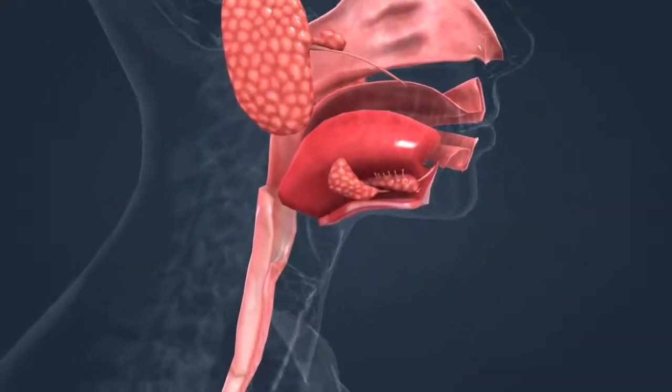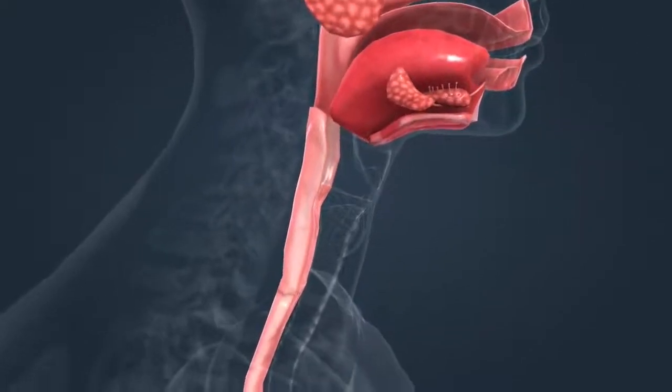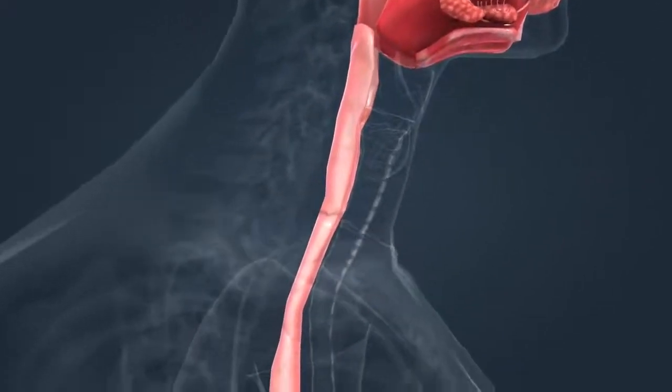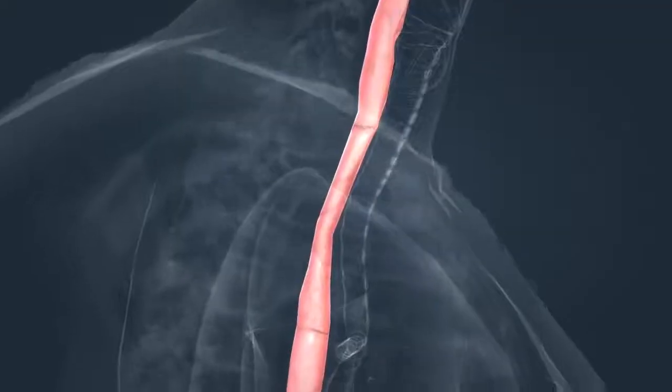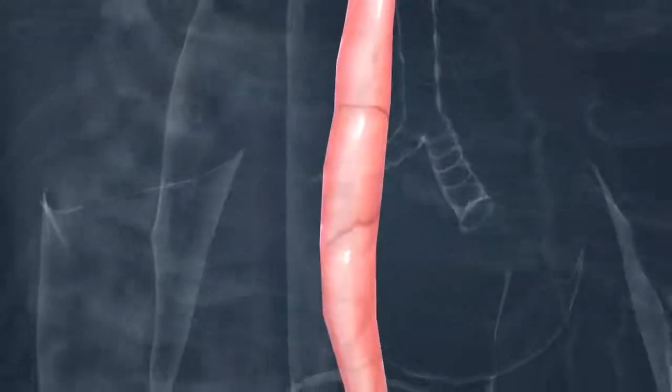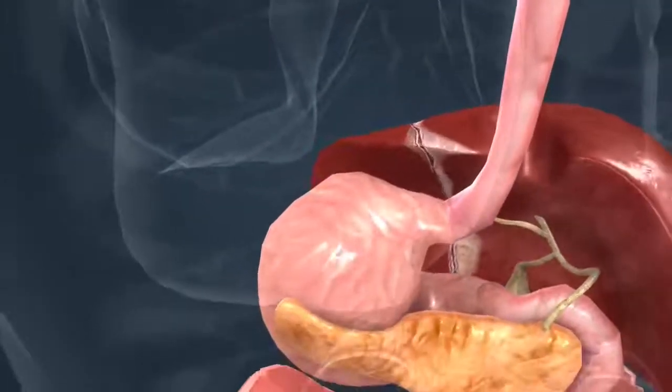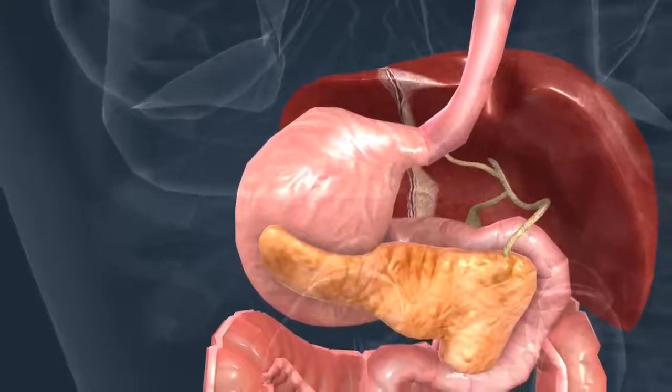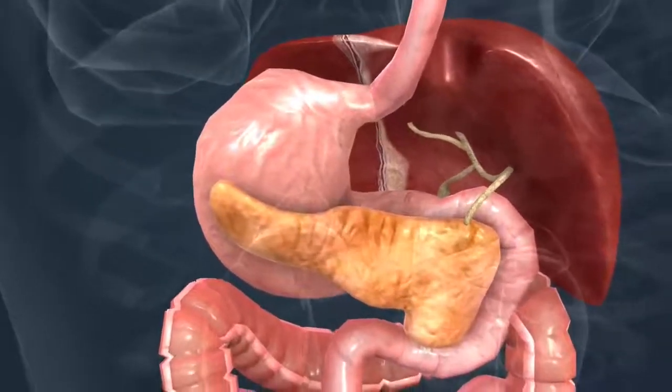The digestive system is responsible for the digestion and absorption of nutrients. Food is crushed in the mouth by the teeth. Digestion of carbohydrates can then begin. Proteins are digested in the highly acidic stomach. Then, in the small intestine, all three types of nutrients are processed.